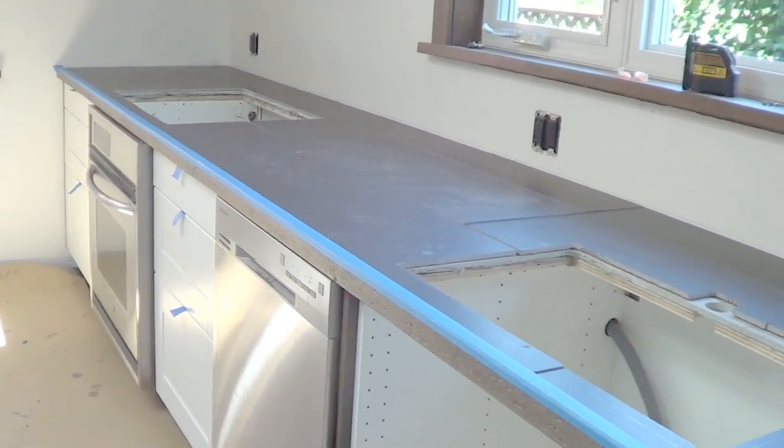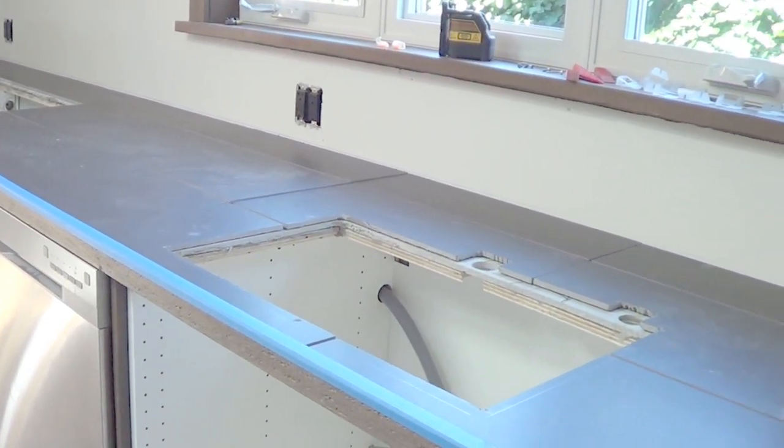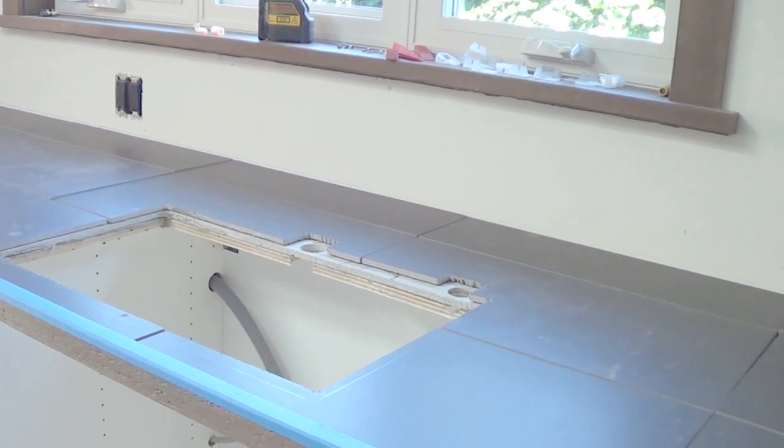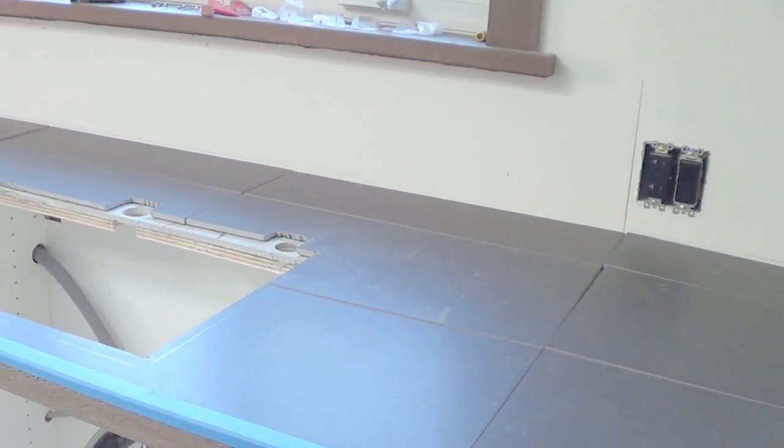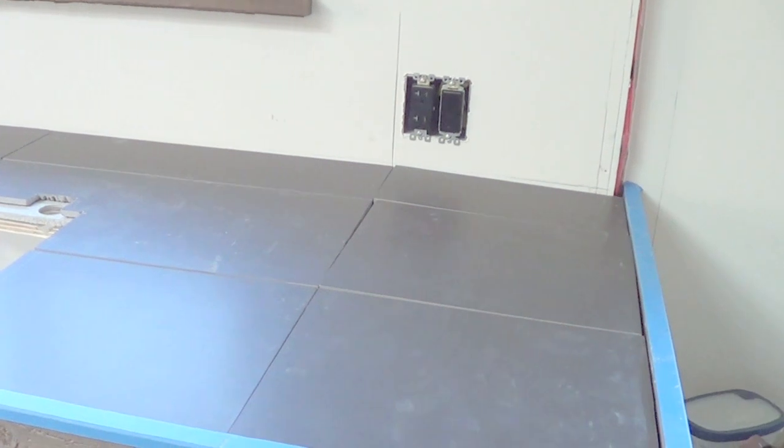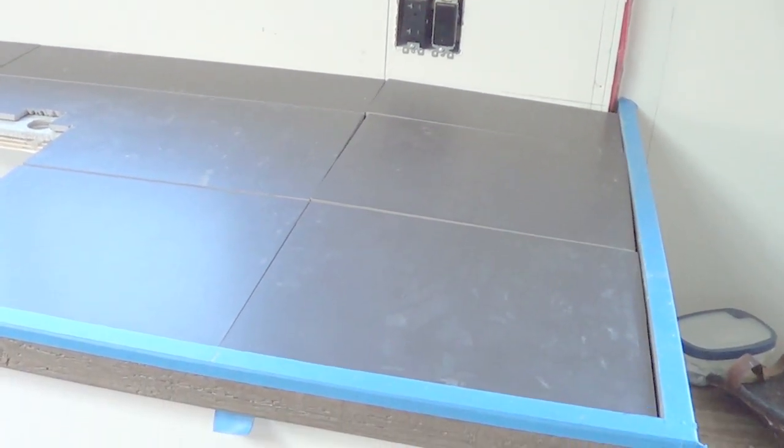So here's the counter now. I've pre-cut all the tile, laid it all out just like a floor and taped off that nosing, got some mortar mixed up and we're ready to start setting the tile.